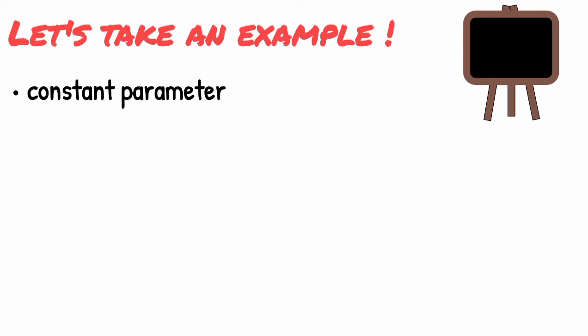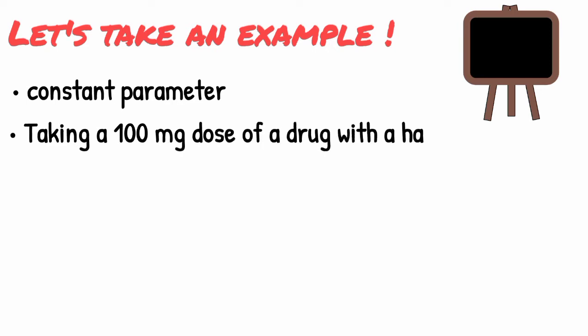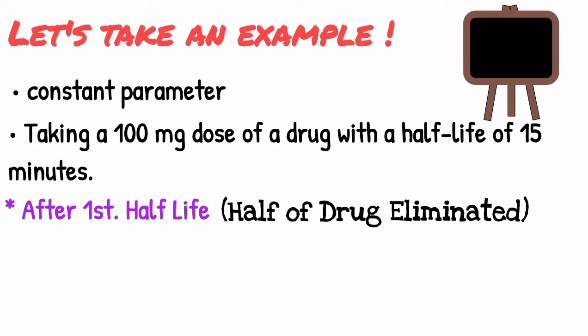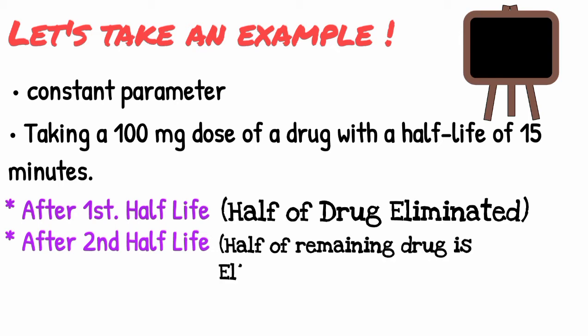For example, if a person is taking a 100 mg dose of a drug with a half-life of 15 minutes, then after passing one half-life or after 15 minutes, half of the drug, that will be 50 mg, is eliminated from the body. After 30 minutes or after passing the second half-life of a drug, half of the 50 mg of remaining drug will be eliminated from the body, that would be 25 mg. And this process is carried on until the total amount of the drug is eliminated from the body.